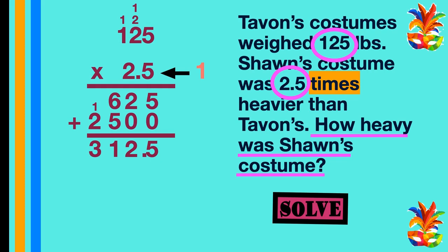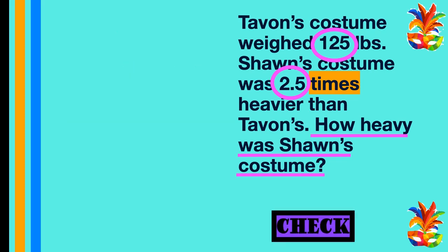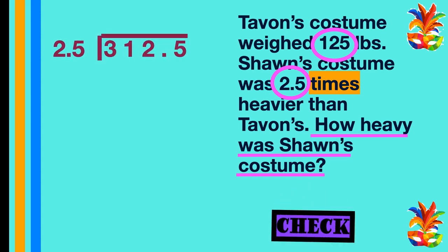Before we're done, we need to check our answer. To check multiplication, we do the inverse operation which is division. When we divide by decimals, the easiest thing is to turn the divisor into a whole number. We turn 2 and 5 tenths into a whole number by moving the decimal point one digit to the right. What we do to the divisor we must also do to the dividend — so we move the decimal in 312 and 5 tenths one space to the right. Our numbers become 25 and 3125. Now we can divide.